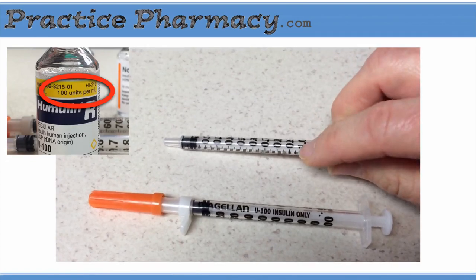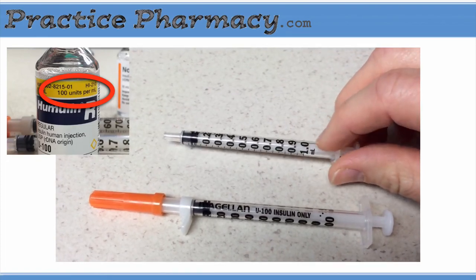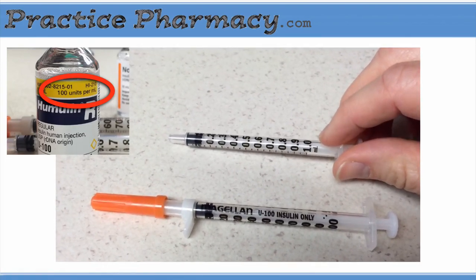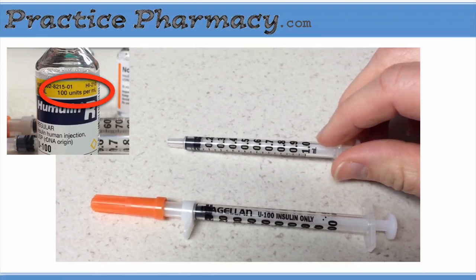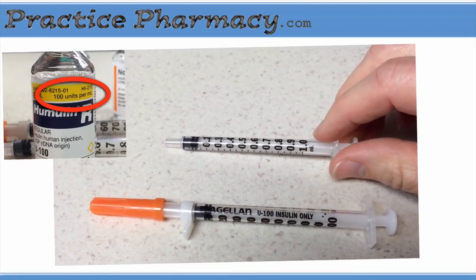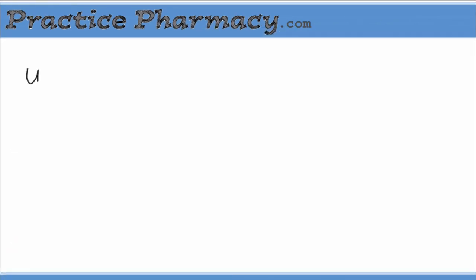This is an insulin syringe. When using an insulin syringe, you simply draw back to the line corresponding to the number of units of insulin that you want.